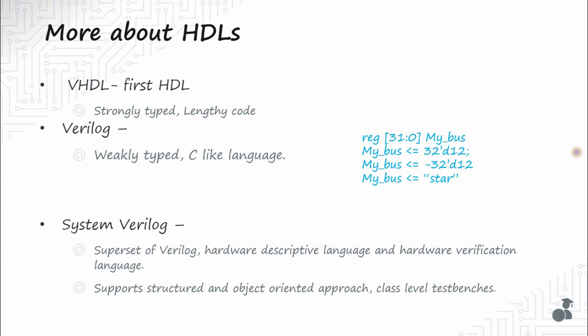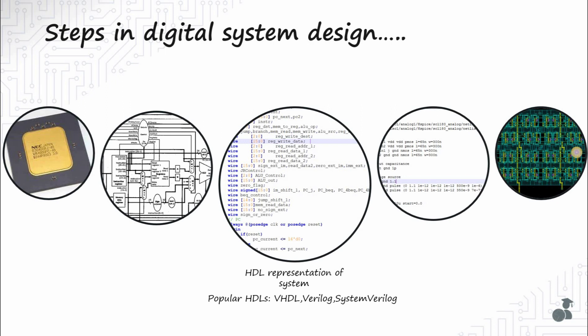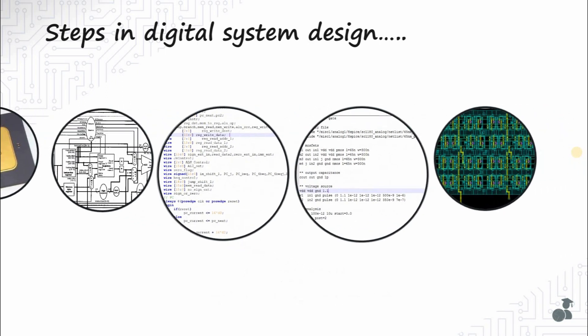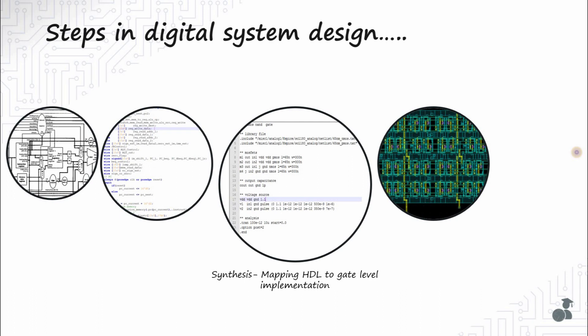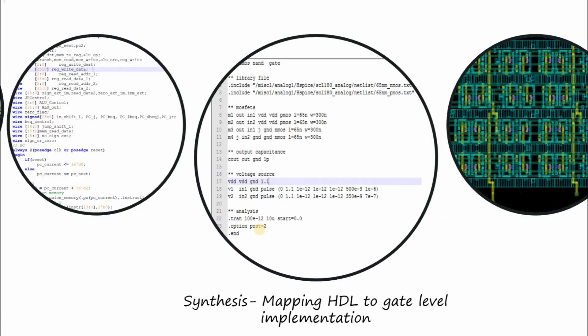In this tutorial series, we shall use Verilog for design as it is simpler to learn. Now that we have the HDL code ready, it must then be converted into gate-level implementation and mapped to a target technology library, provided by fabrication units, which contains information about characteristics of the standard logic cells. Converting HDL to gate-level implementation is called synthesis. You must have heard about creating a netlist from Verilog code — a netlist is simply a list of electrical connections that describe your circuit. Here you can see a netlist of a CMOS NAND gate, which specifies the process technology node.